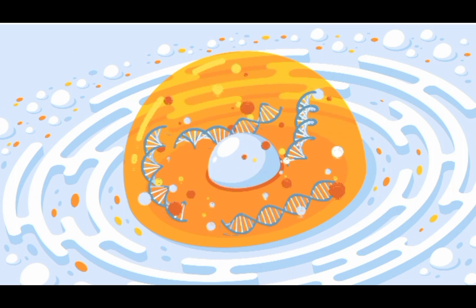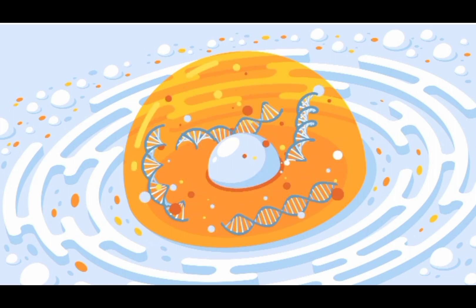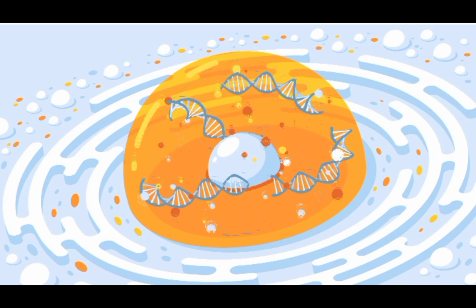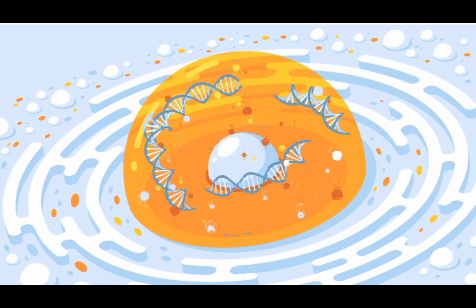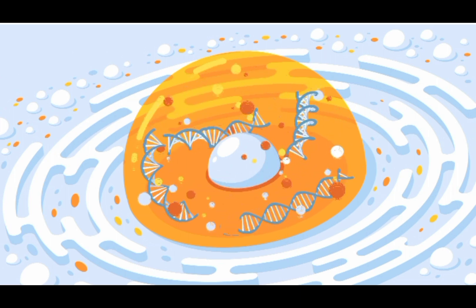The nuclear membrane is not a complete barrier. It is perforated by nuclear pores which are made up of specialized transport proteins called nucleoporins. Certain substances pass freely through these pores between the nucleus and the surrounding cellular substances.